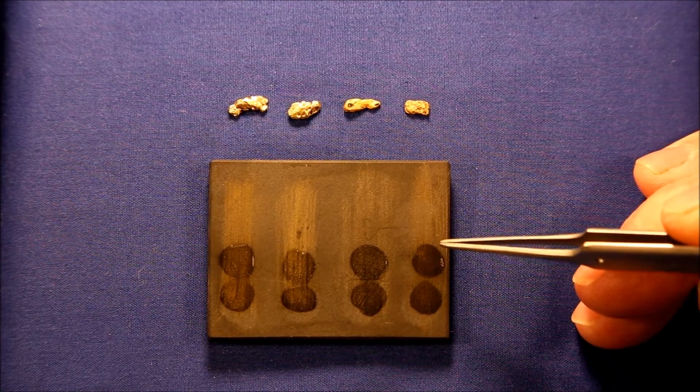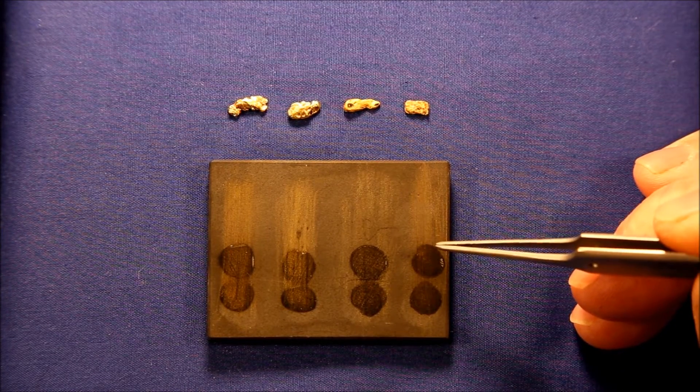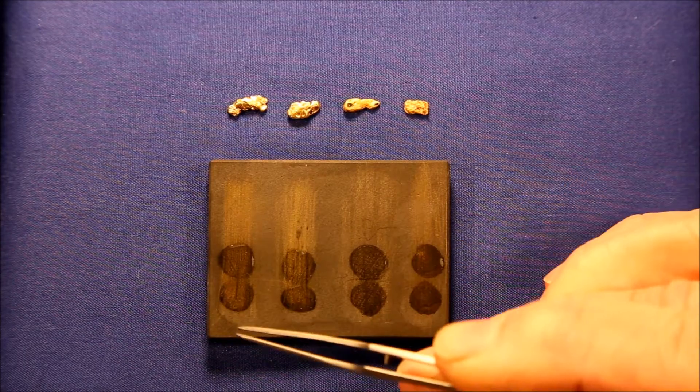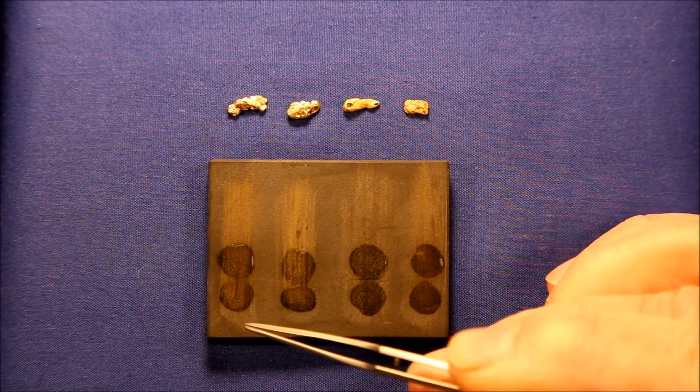Next you put drops of the graduated acids in order on each of the samples and you see at which point it starts dissolving.